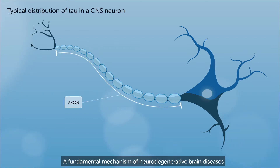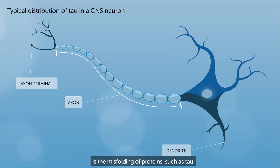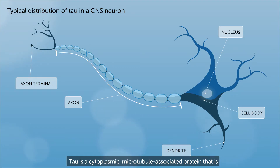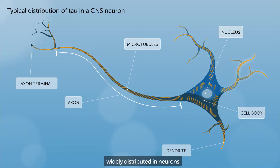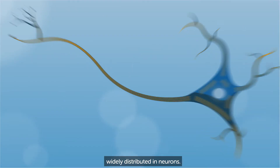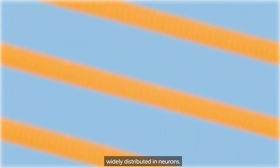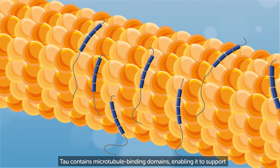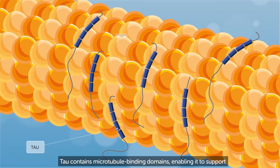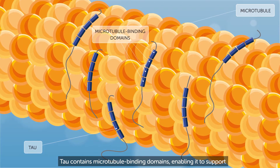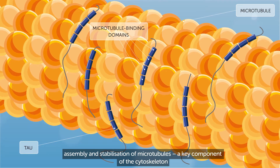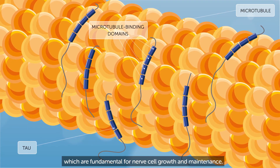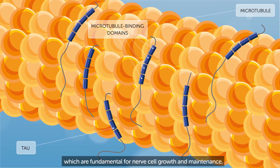A fundamental mechanism of neurodegenerative brain diseases is the misfolding of proteins such as tau. Tau is a cytoplasmic microtubule-associated protein that is widely distributed in neurons. Tau contains microtubule binding domains enabling it to support assembly and stabilisation of microtubules, a key component of the cytoskeleton which are fundamental for nerve cell growth and maintenance.